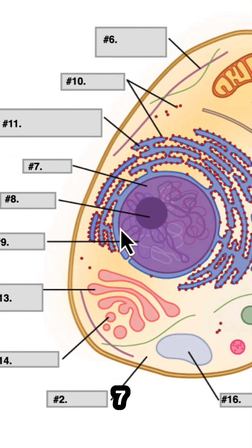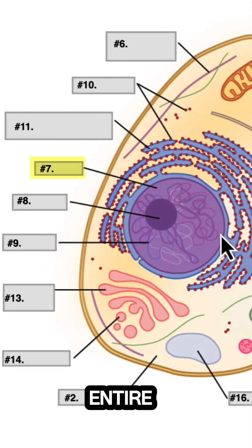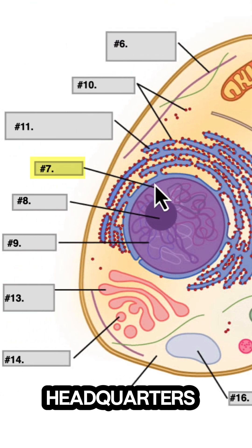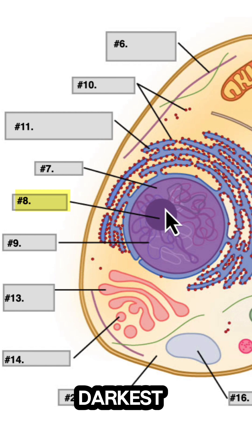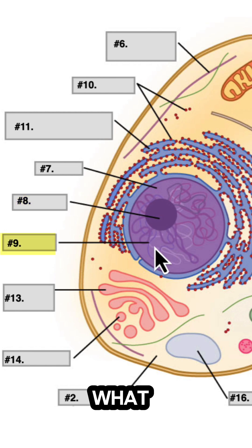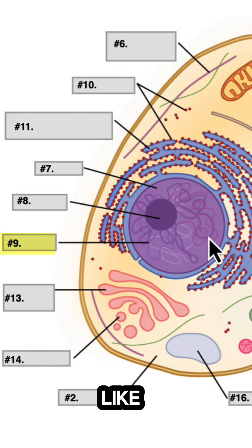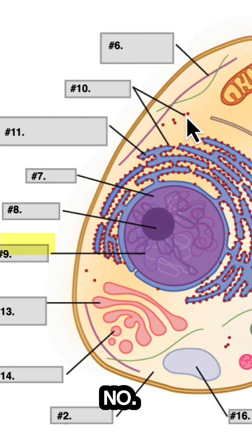Number seven is this entire structure — the headquarters of the cell. Number eight is this darkest staining region. Number nine: what is all of this stuff that looks like spaghetti?